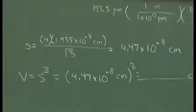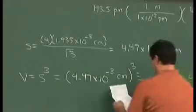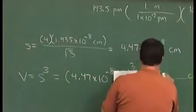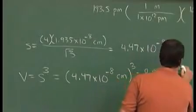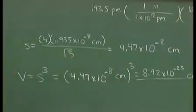When we cube the number, we'll get a number in just a moment. When we cube centimeters, we get centimeters cubed. I calculate this to be 8.92 times 10 to the negative 23rd cubic centimeters.